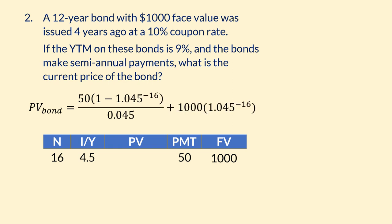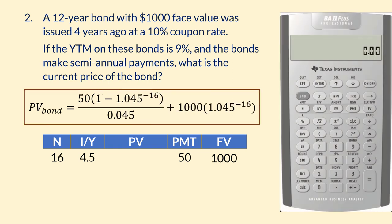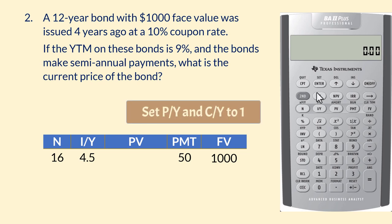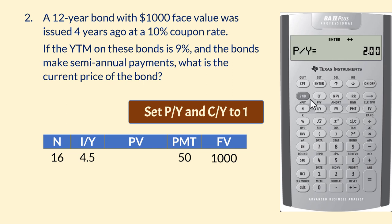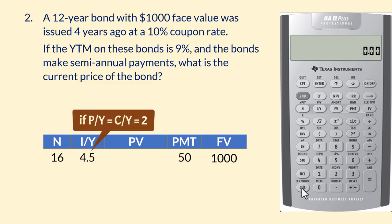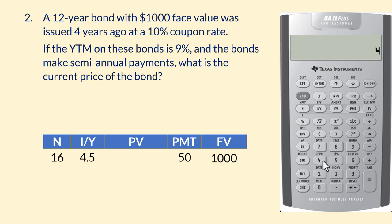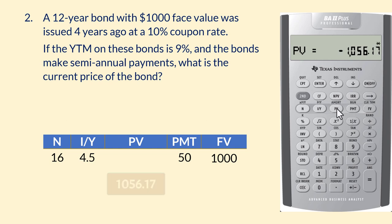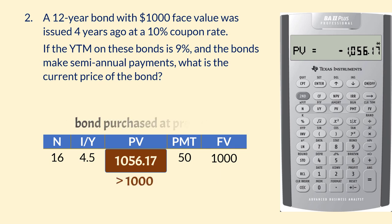Manually, we can compute the value of the bond using the formula as seen here. But using the BA2 Plus calculator, we ensure that P/Y and C/Y are set to their default of 1 — that is, 2nd P/Y, 2nd Clear Work 3 times. Note that if you set P/Y and C/Y to 2, then I/Y must be 9 and not 4.5. So: 16N, 4.5 I/Y, 50 PMT, 1,000 FV, compute PV — and that gives 1,056.17. Since this is more than the par value of 1,000, the bond is purchased at a premium. We can also use this Excel input to arrive at the same answer.